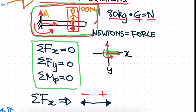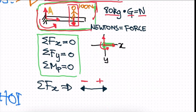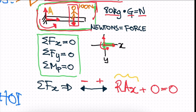Something important is to define this point — this is point A. So we can say reaction A in the x direction plus zero is equal to zero. We can assume RAX exists, but there are no other forces involved in the x direction, so RAX is equal to zero.